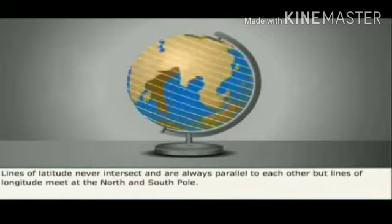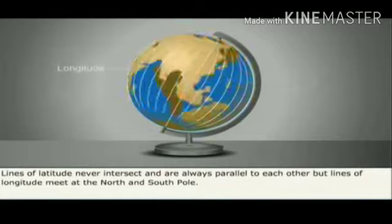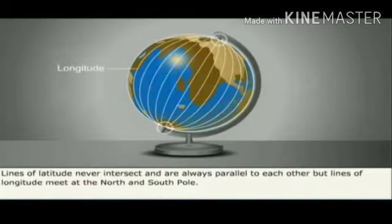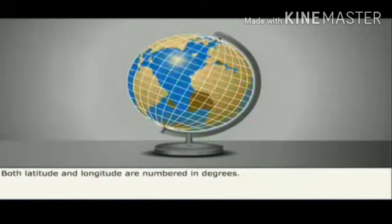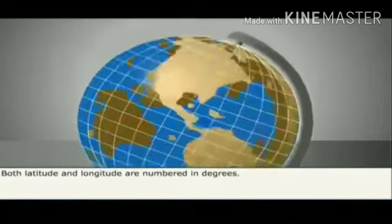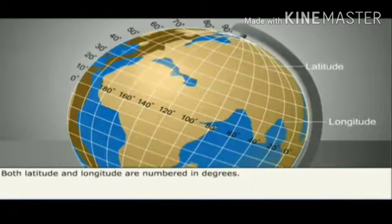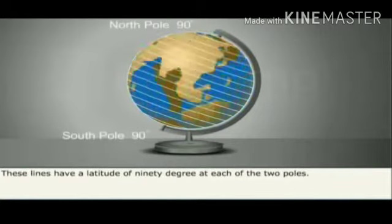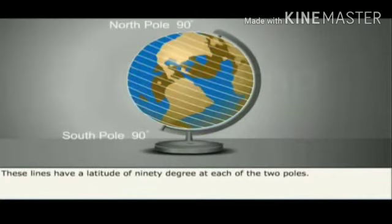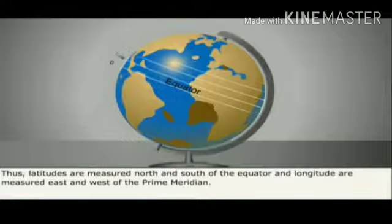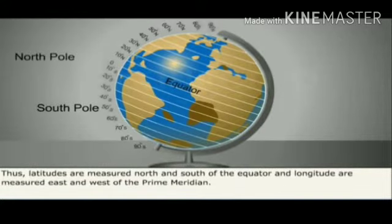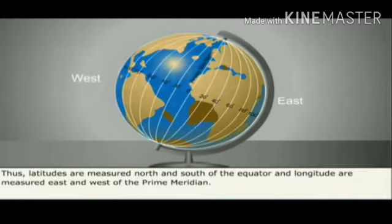Lines of latitude never intersect and are always parallel to each other, but lines of longitude meet at the north pole and south pole. Both latitude and longitudes are numbered in degrees. These lines have a latitude of 90 degrees at each of the two poles. Latitudes are measured north and south of the equator, and longitudes are measured east and west of the prime meridian.